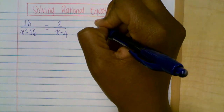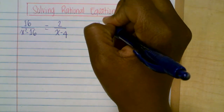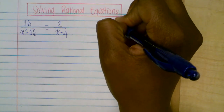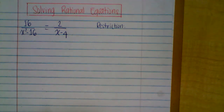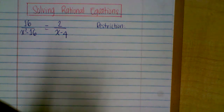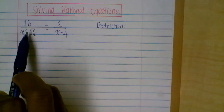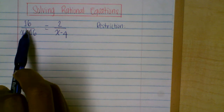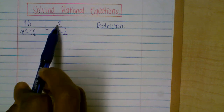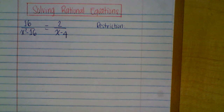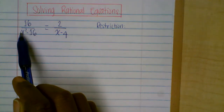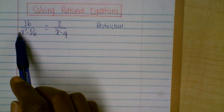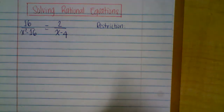What I would like you to do before we start solving is to identify the restriction. The restriction means there is a number that the domain cannot be. The reason is, when you have a rational expression, you cannot have a number divided by zero. So you need to figure out what number, if you give to x, would make the denominator equal to zero.